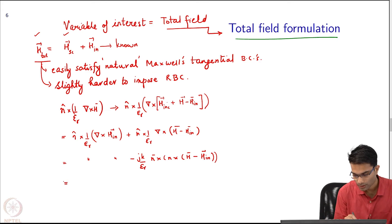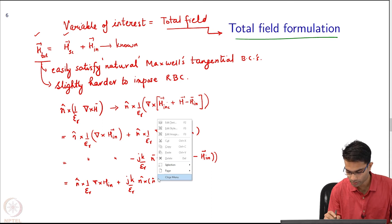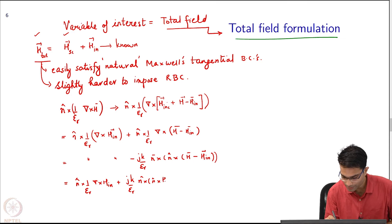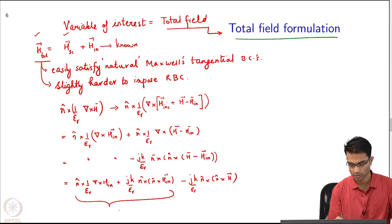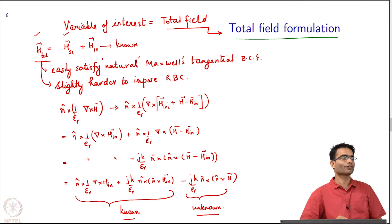So that was what n cross 1 by epsilon_r and this was replaced by, let us have a look over here. So this whole expression over here, minus j k by epsilon_r n cross n cross, the same expression must hold true. Now in these expressions there are terms that are known and there are terms that are not known.